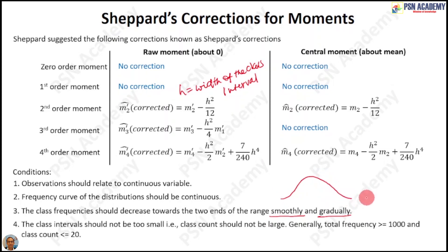In the last condition, the class interval should not be too small. That means your number of classes should not be too large. As a rule of thumb, you must have total frequency greater than 1000 and the number of classes should be less than 20. If you go like this, then you can have a good corrected moment.